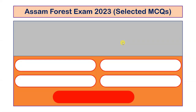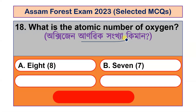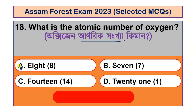Question number 18: What is the atomic number of oxygen? Options are 8, 7, 14 and 21. The correct answer is option A, 8. The atomic number of oxygen is 8.